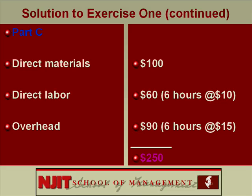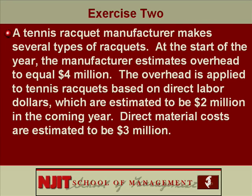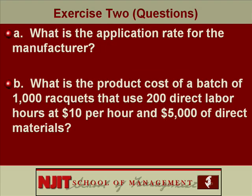Let's try another problem. It's about a tennis racket manufacturer who makes several different types of rackets. They decided to charge overhead using direct labor dollars. At the start of the year, they estimate overhead to be $4 million, they estimate their payroll to be $2 million, and direct material costs are estimated to be $3 million. Stop the presentation, try this problem and restart when you are ready.